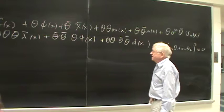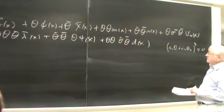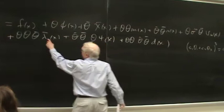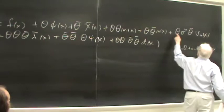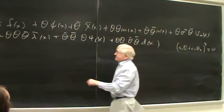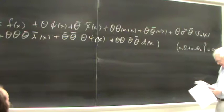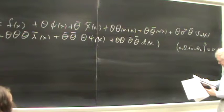The general superfield contains a scalar field, a spinor field, another spinor field, additional scalar fields, and a vector field (from the σ^m term). The idea is then to construct actions by integrating over both d⁴x and dθ dθ̄ — so the action is ∫ d⁴x dθ dθ̄ F(x,θ,θ̄). This automatically builds in supersymmetry invariance.